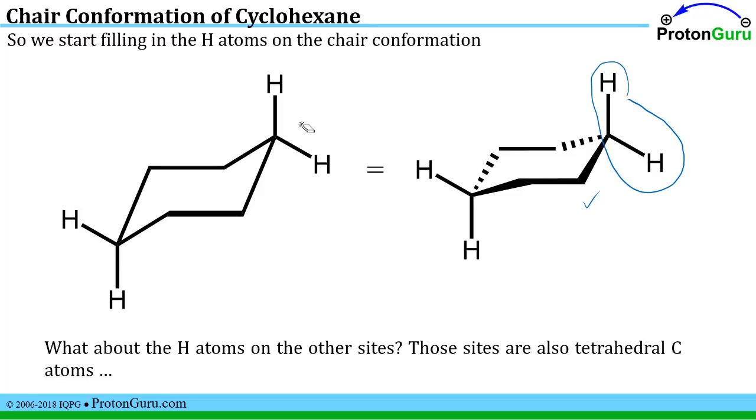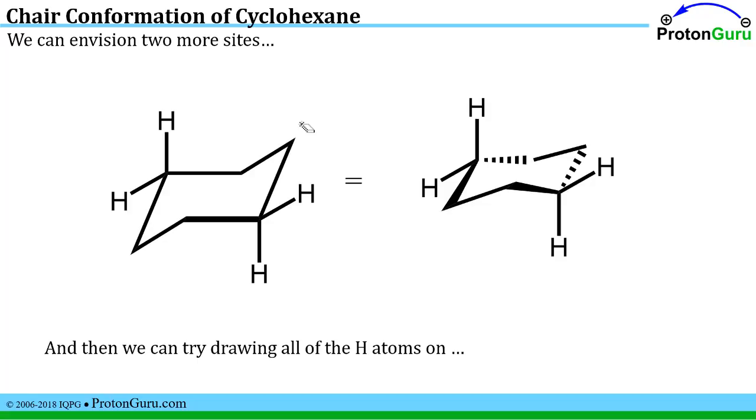Well what about all the other hydrogens on the other sites? Well those sites are also tetrahedral carbon atoms. So we can envision more sites. We could draw a tetrahedron in the front, it looks a little bit messier than when I drew them on the corners or on this back side here.